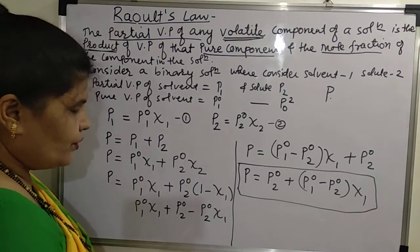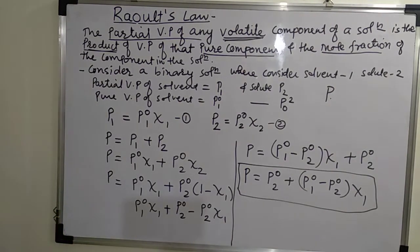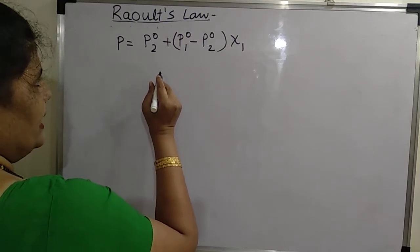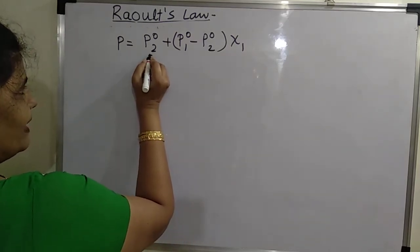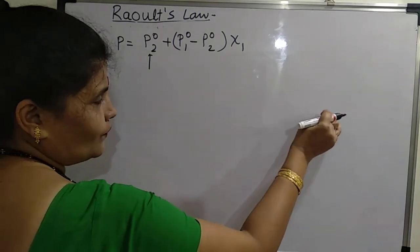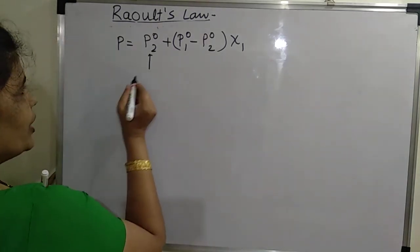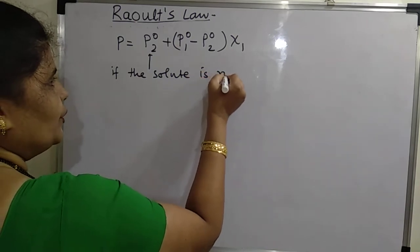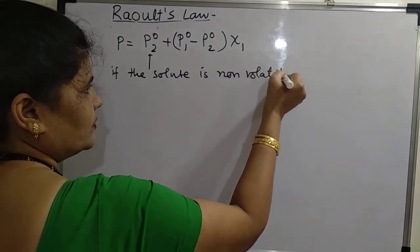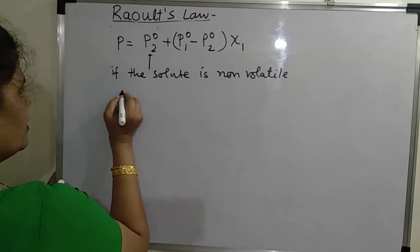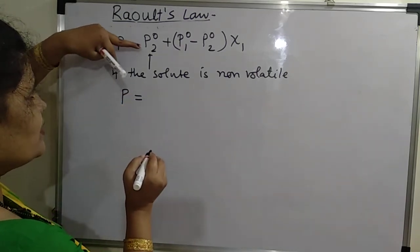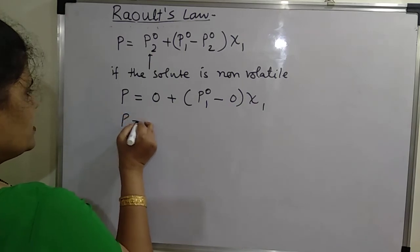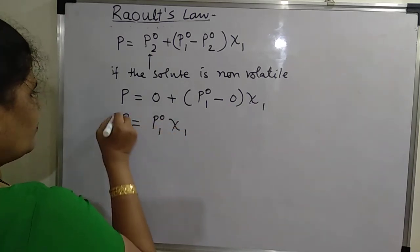Now if the solute is non-volatile, the solute will not contribute to the total vapor pressure, meaning its partial pressure P2 will be zero. So substituting zero for P02, the total vapor pressure P equals P01·X1 only. This is Raoult's Law for a solution with a non-volatile solute.